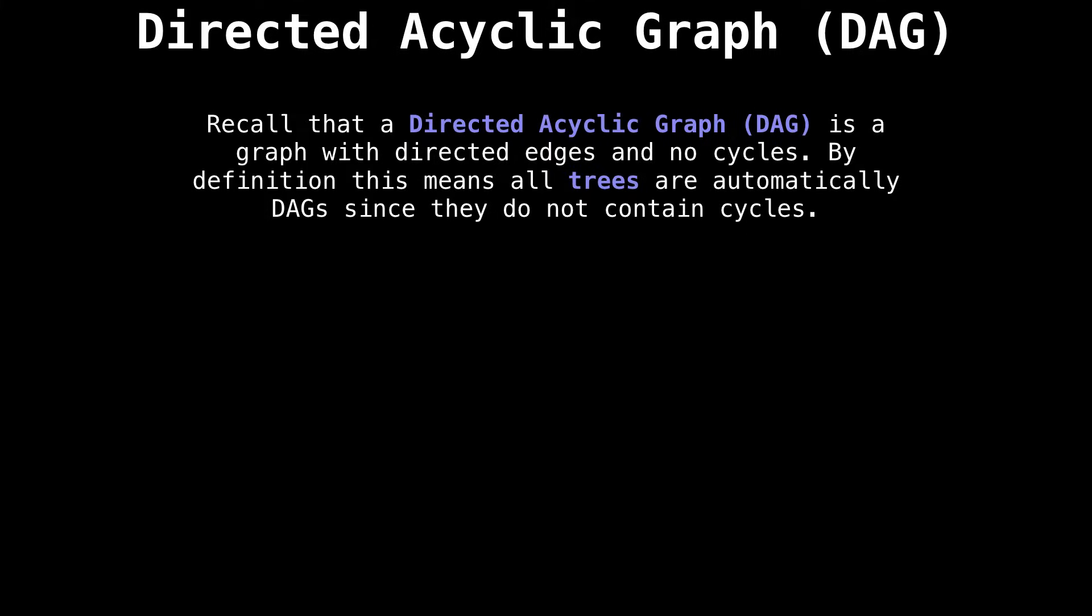Recall that a directed acyclic graph is a graph with directed edges and no cycles. By definition, this means that all trees are automatically directed acyclic graphs, since they do not contain any cycles.